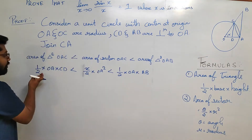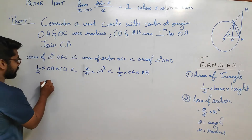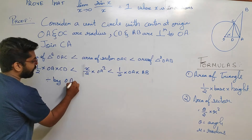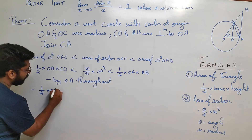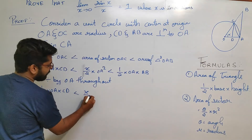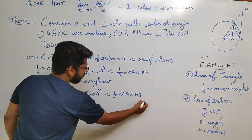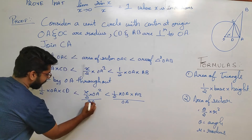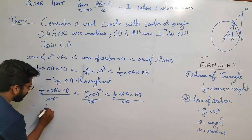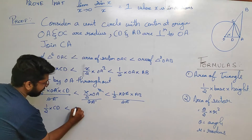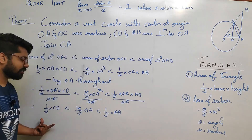The common factor in all three expressions is OA. So divide throughout by OA: (1/2) × CD is less than (x/2) × OA is less than (1/2) × AB. After cancellation, we get: (1/2)CD < (x/2)OA < (1/2)AB. This is our working equation.